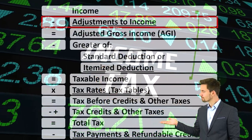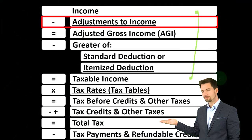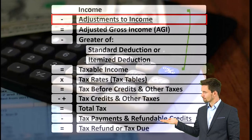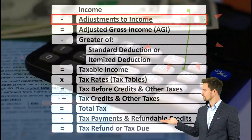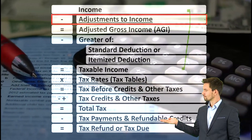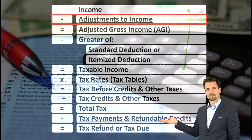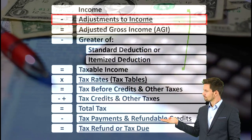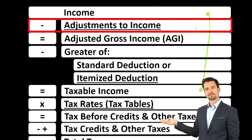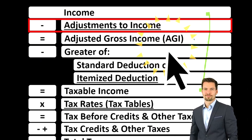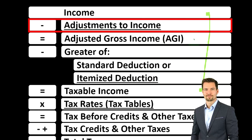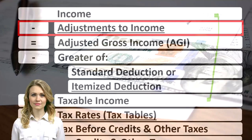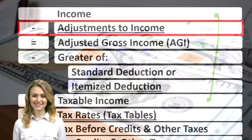Everything's flipped on its head — we want the taxable income to be as low as possible, as opposed to normally where we want net income to be as high as possible. The adjustments to income are, in essence, a type of deduction — a contra income account — decreasing income on the way down to taxable income. This gets us to the subtotal of adjusted gross income, which is important because it's used for calculations to decrease benefits from deductions and credits related to phase-outs.